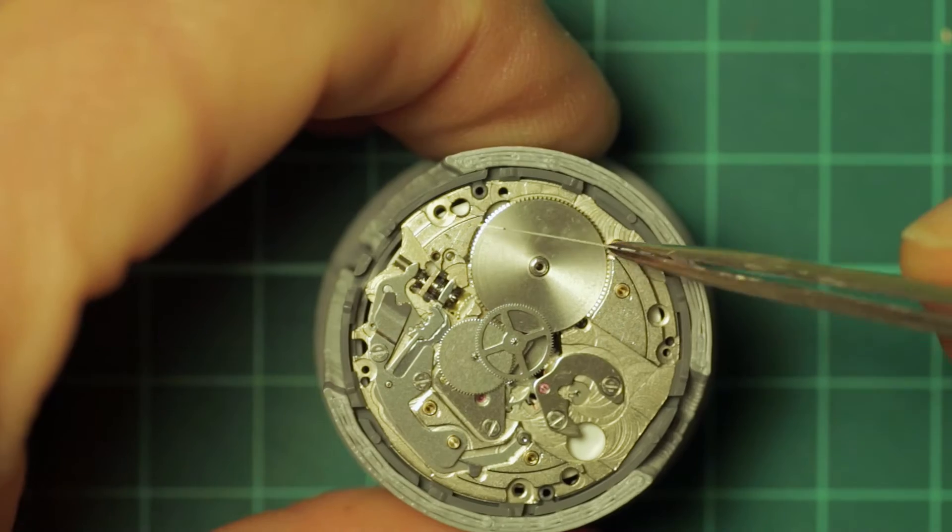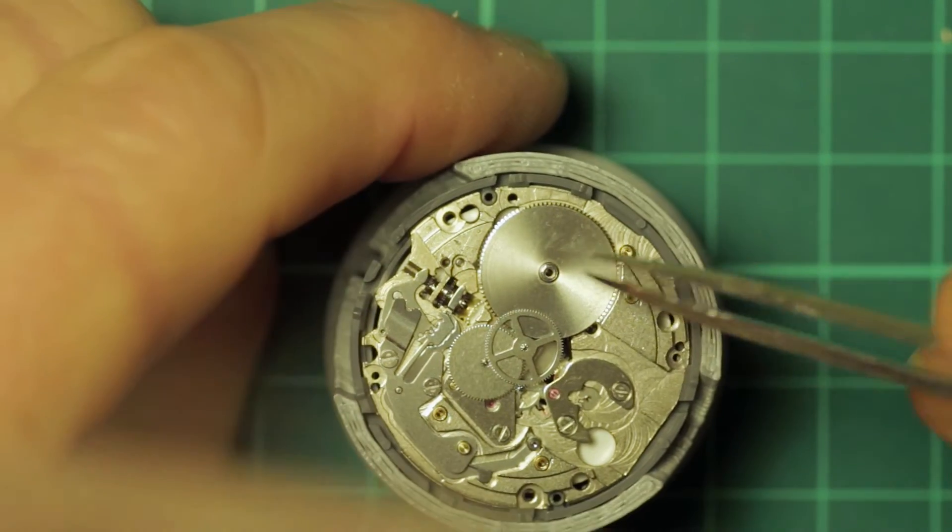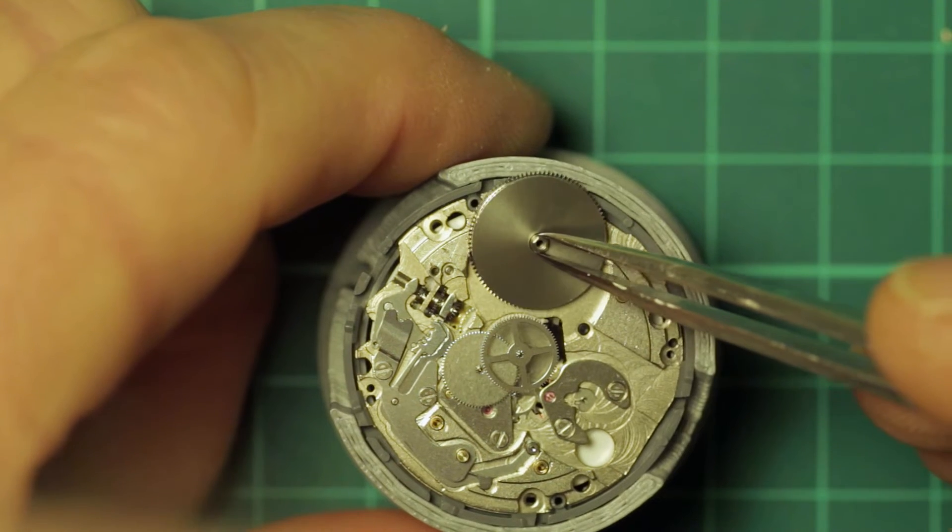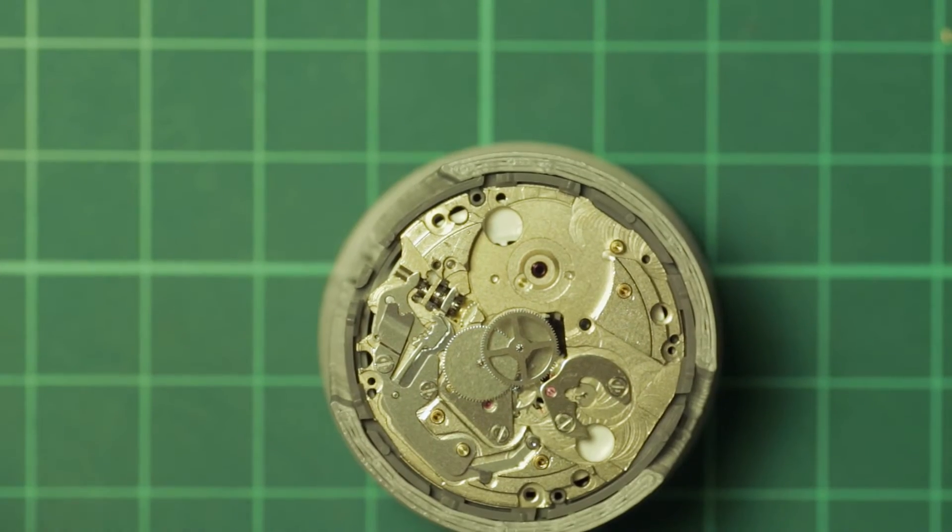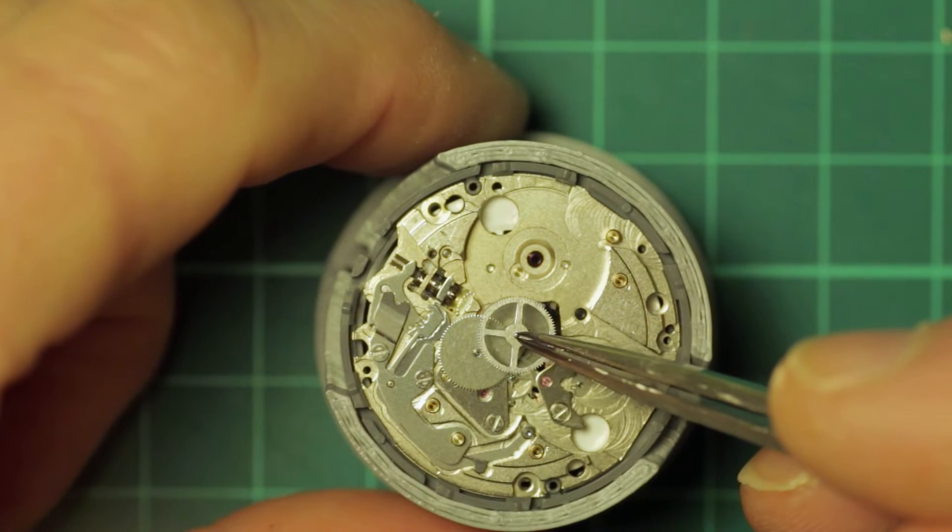Moving back to the movement we remove the click and click spring which is a combined piece, and then remove the barrel and the train of wheels.